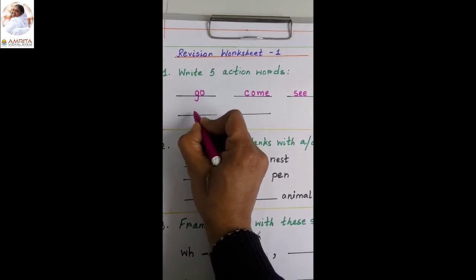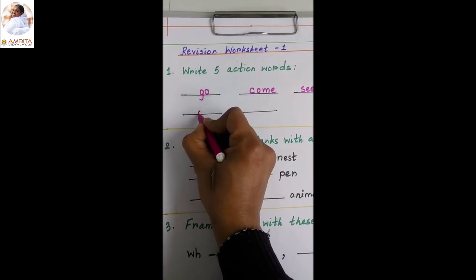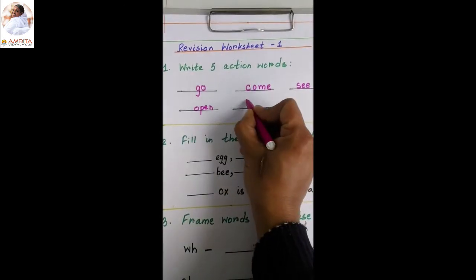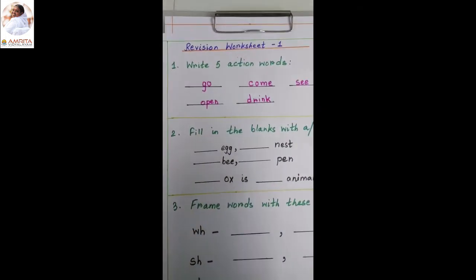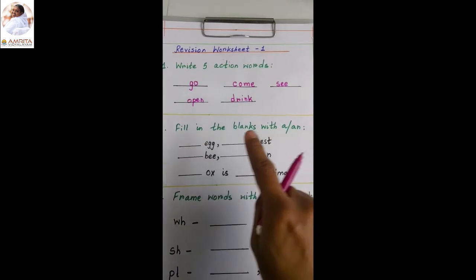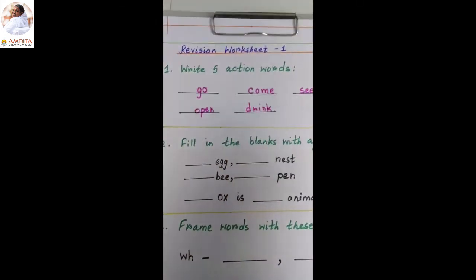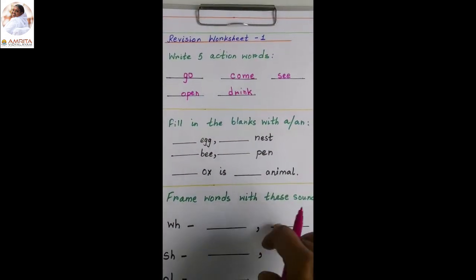Then what can we write? O-P-E-N open, D-R-I-N-K drink, and there are many more. But we have been asked to write only five action words. So we have written only five action words.